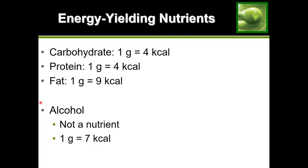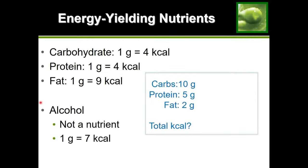Let's look at an example. Here's a food product that contains 10 grams of carbohydrates, 5 grams of protein, and 2 grams of fat. The question is: how many total calories do we get from this food product? We have the nutritional information in grams, but we need to convert it to calories and add it up for our total. We do that using our key — how many calories we get per gram of each nutrient.